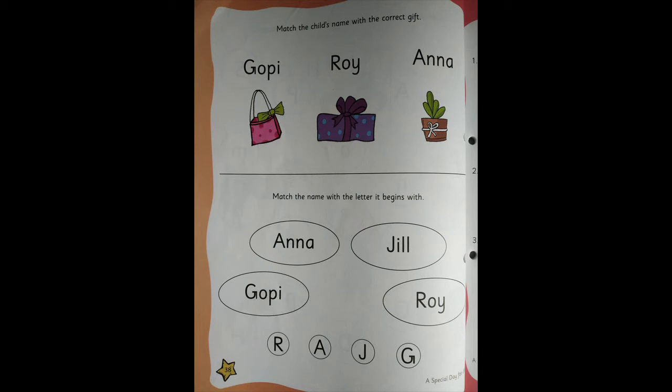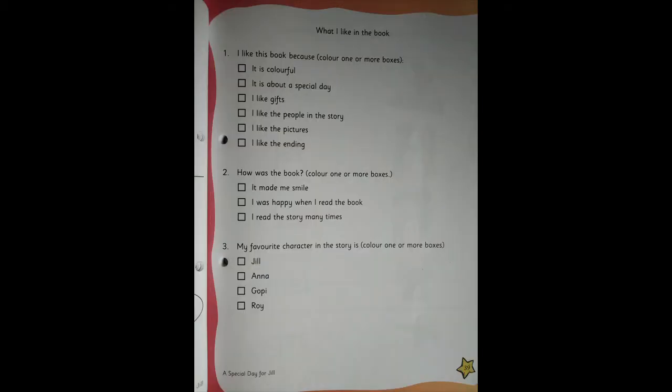Now coming to the next part: match the name with the letter it begins with. There are four children in the story and their names are given in the book. You need to recognize the name and recognize the first capital letter, then match.